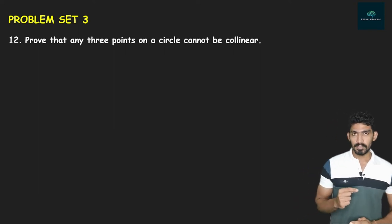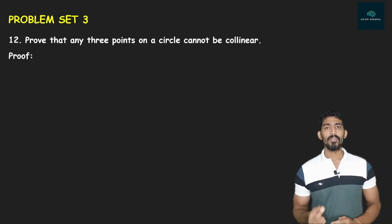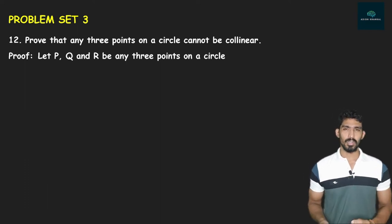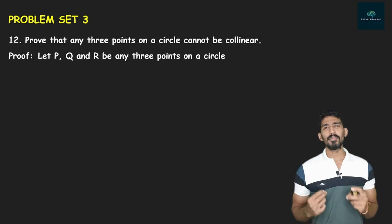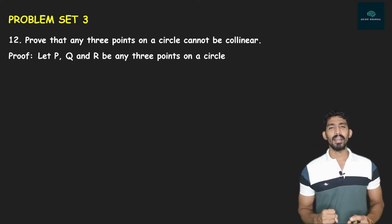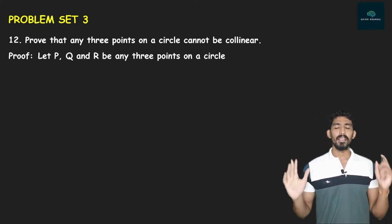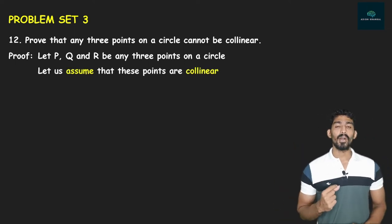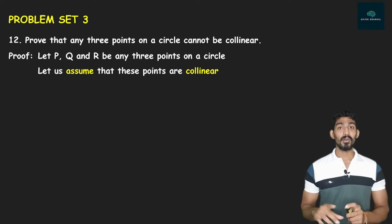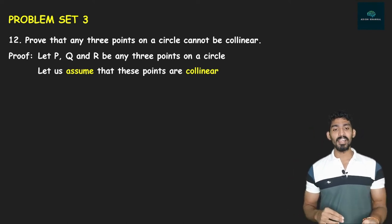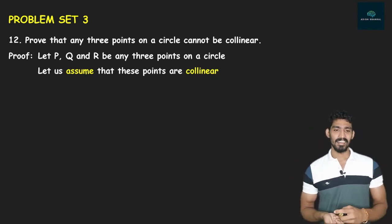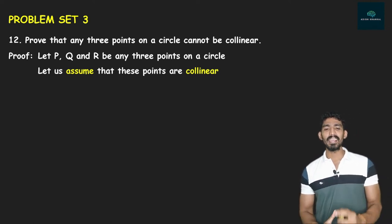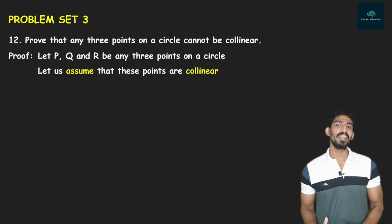यह contradictory method आप लोग ने 9th standard में पढ़ा था, जहाँ पे questions थे — prove that 2 + √3 is irrational — तो आप लोग prove करते थे by assuming that it is rational, और फिर वो assumption गलत ठहर जाती थी। Similarly यहाँ पे भी इसी type का question है। Proof: let us assume that P, Q and R be any 3 points on a circle, and let us assume that these points are collinear to each other — हमें prove करना है कि यह 3 points non-collinear हैं।